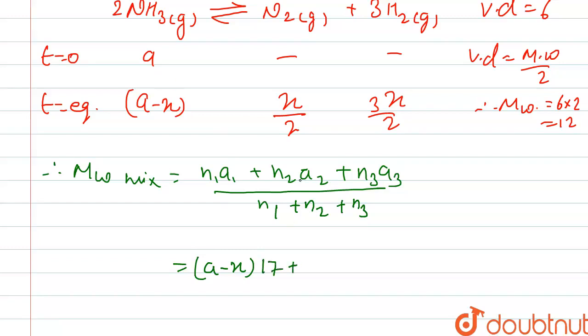n₃ is 3x/2, and molecular weight of H2 is 2. Total moles at equilibrium after solving we get (a+x), and molecular weight of mixture we calculated is 12, so it equals 12.